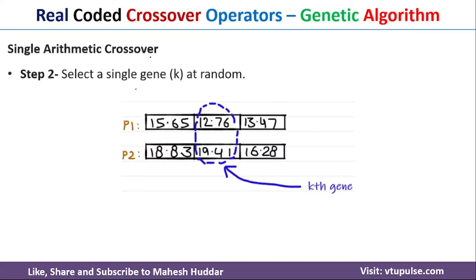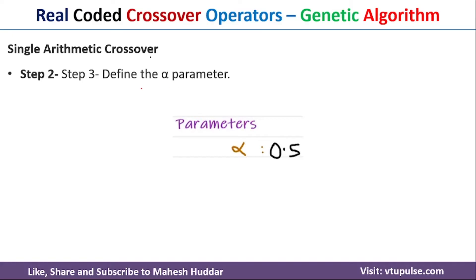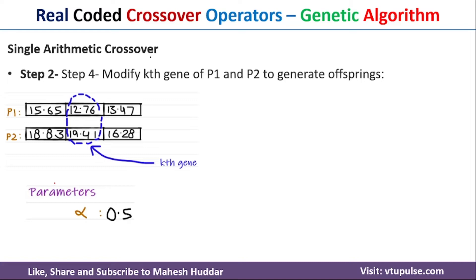The second step is to select one single gene. In this case I have selected the second gene for crossover. Once you select this gene, the next step is to select the alpha parameter. Here alpha is equal to 0.5, which can be given as part of the problem definition or selected randomly. Once you have the two parents, the selected gene, and the alpha parameter, the next step is to identify the value for this kth gene to get the new offspring.